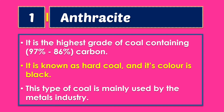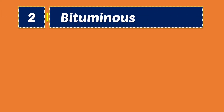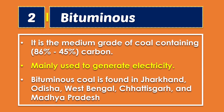Coal is used in chemical production. Types of coal: anthracite, bituminous, sub-bituminous, and lignite. Anthracite is the highest grade of coal, containing 86% to 97% carbon. It is known as hard coal, its color is black, and this type is mainly used by the metals industry.